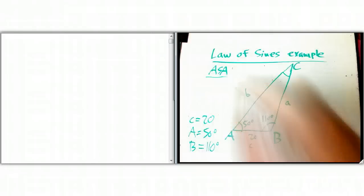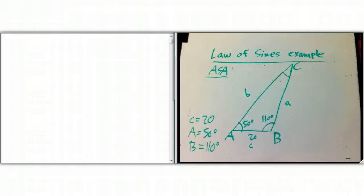Well, the first thing to do any time you're given two angles is just solve for the third angle. That's very easy. So C is just going to be 180 minus the 50, and then minus 110, and so that's going to be 20 degrees.